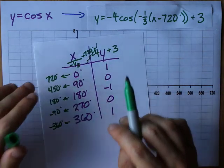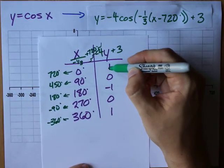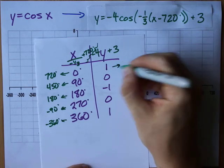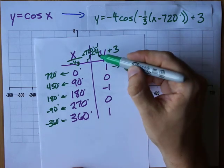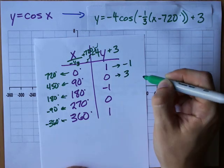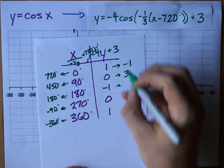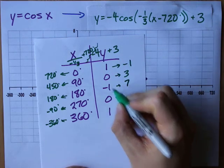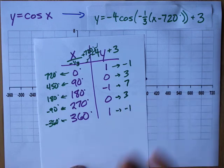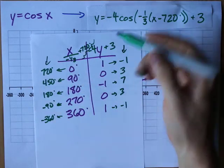Once you've done these transformations, I haven't done the y values yet. 1 times negative 4 is negative 4, add 3, I get negative 1. Negative 4 times 0 is 0, plus 3 is 3. Negative 1 times negative 4 is positive 4, plus 3 is 7. 0 apparently becomes 3 and 1 apparently becomes negative 1. Now I have my transformed x's and my transformed y's.